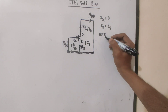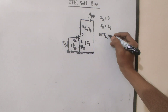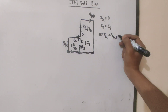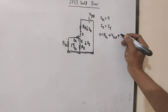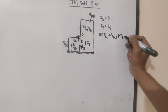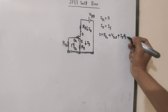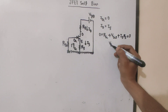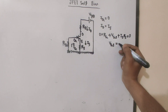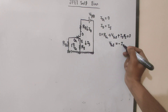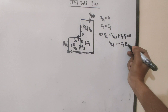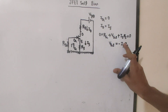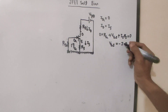Applying KVL: 0 times Rg plus Vgs plus Is times Rs equals 0. So Vgs equals minus Is times Rs. And since Is equals ID, we substitute IS with ID.